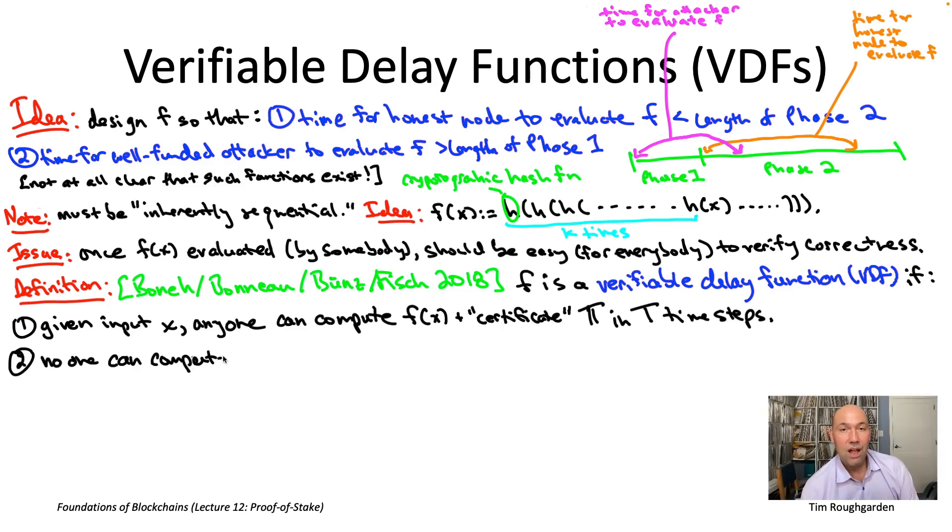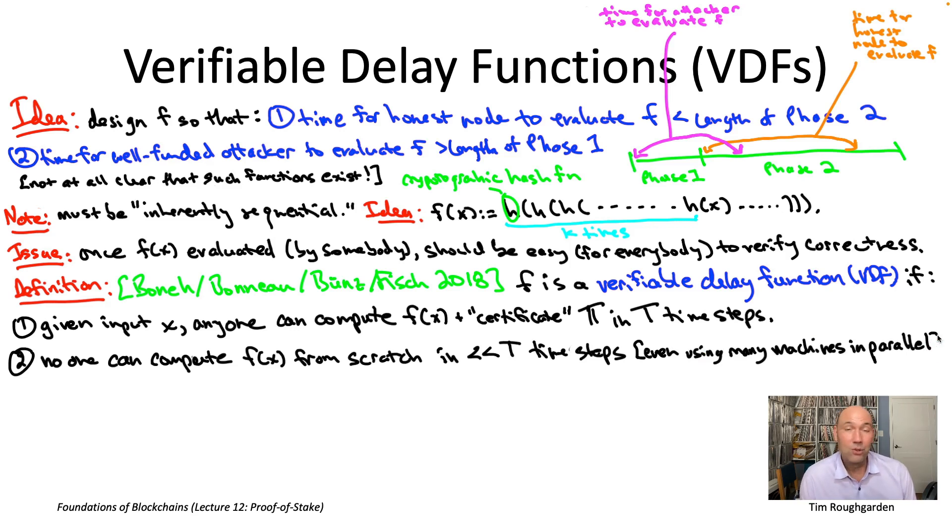The second property is a sort of converse. It says if you're not willing to put in the work, meaning you're going to do much less than capital T time steps worth of work, and moreover, nobody actually just tells you the answer, then there's no way you can magically guess what the output of little f is going to be.